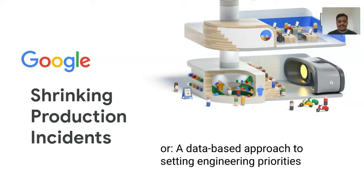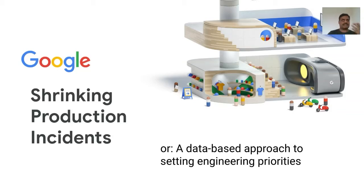So what are we going to talk about today? As mentioned and as on the screen, it's shrinking production incidents — a data-based approach to setting engineering priorities. We will talk about what service outages are, the different phases of service outages, what we can learn from them, and based on those learnings, how we can set engineering priorities and identify opportunities to improve the reliability of your service.